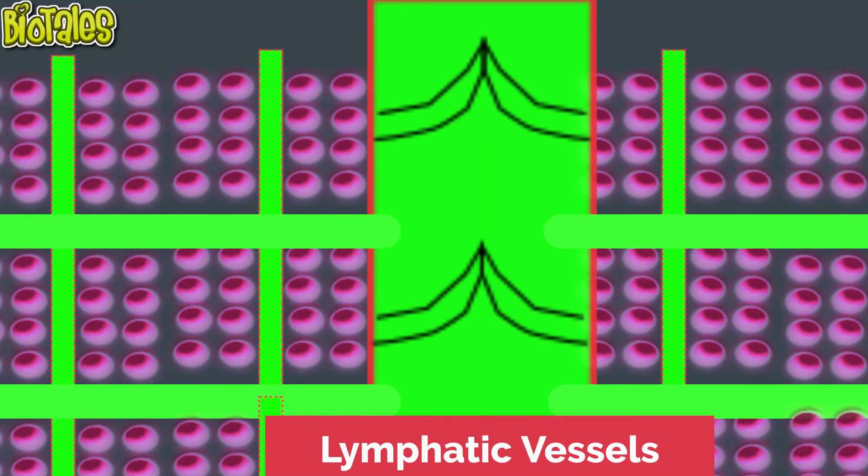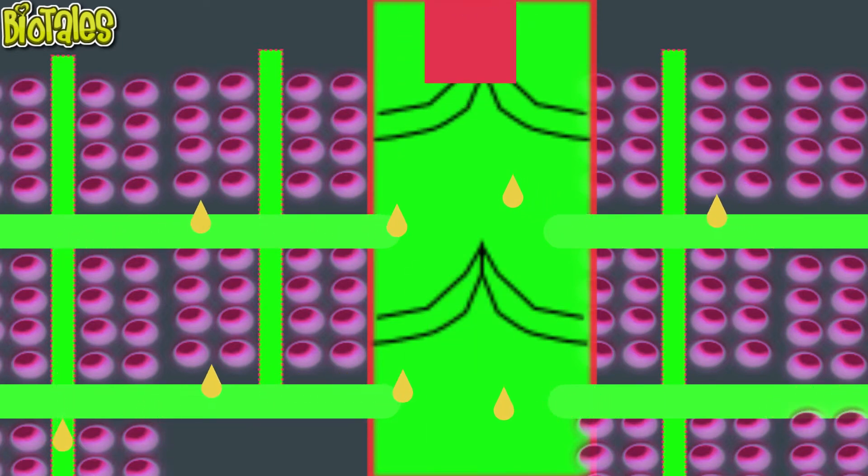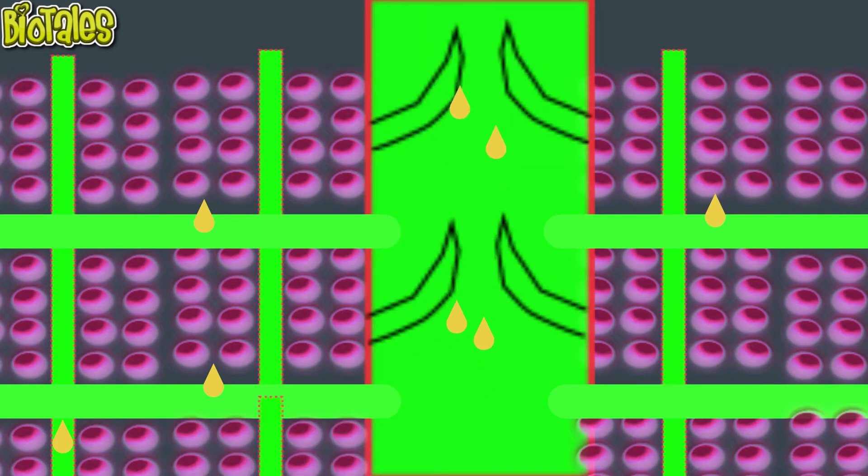These large lymphatic vessels are just like blood veins. They have one-way valves that keep the lymph flowing in one direction only.